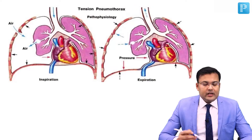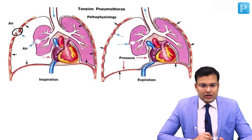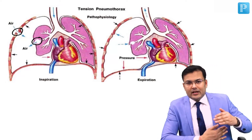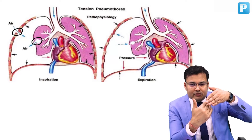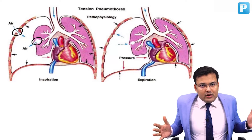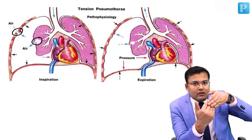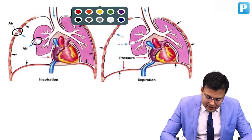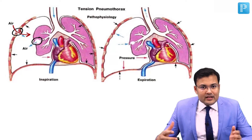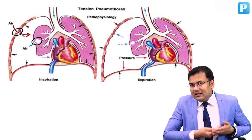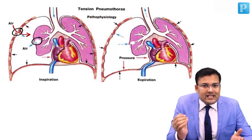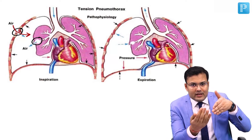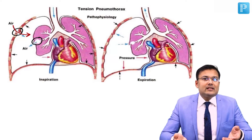Looking at the pathophysiology: with penetrating trauma to the chest wall and injury to the lungs, a one-way valve air leak forms. During inspiration, the chest cavity moves outward creating negative pressure inside. The one-way valve opens, and air enters the thoracic cavity. During expiration, positive pressure closes the valve, so air is retained inside — it cannot escape.